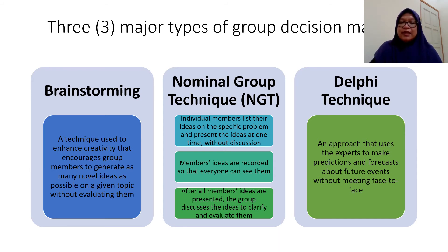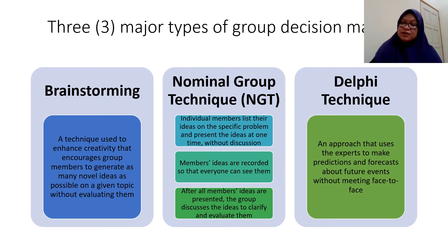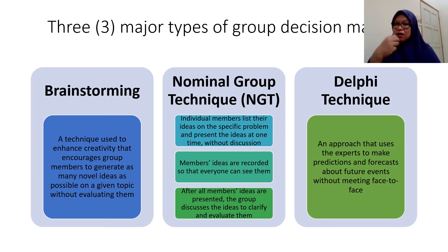The second type is Nominal Group Technique, or NGT. Individual members list their ideas on a specific problem and present them one at a time without discussion. Members' ideas are recorded so that everyone can see them. After all members' ideas are presented, the group discusses the ideas to clarify and evaluate them. Compared to brainstorming, in NGT members list everything individually first, then discuss as a group.